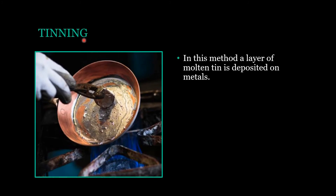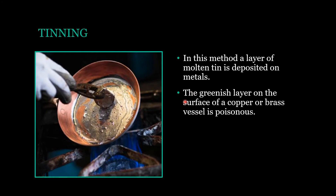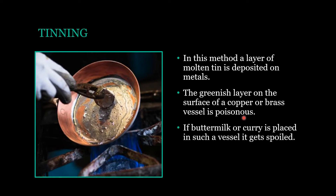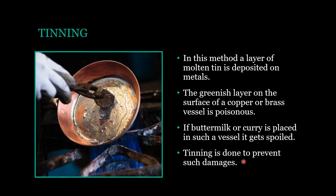The next process is tinning. In this method, a layer of molten tin is deposited on metals. The greenish layer on the surface of copper or brass vessels is poisonous, so if buttermilk or curry is placed in such a vessel, it gets spoiled. Tinning is done to prevent such damage.